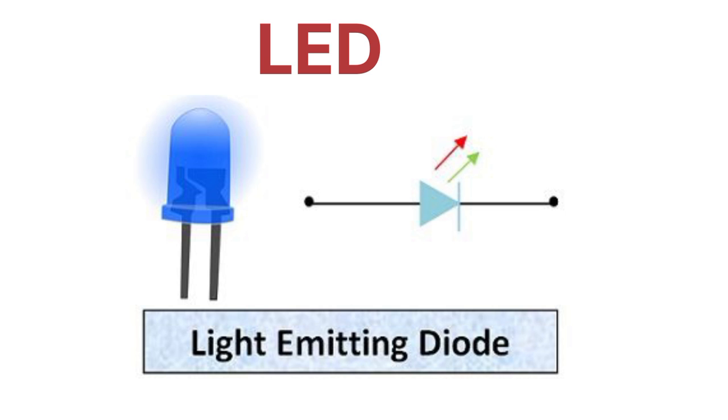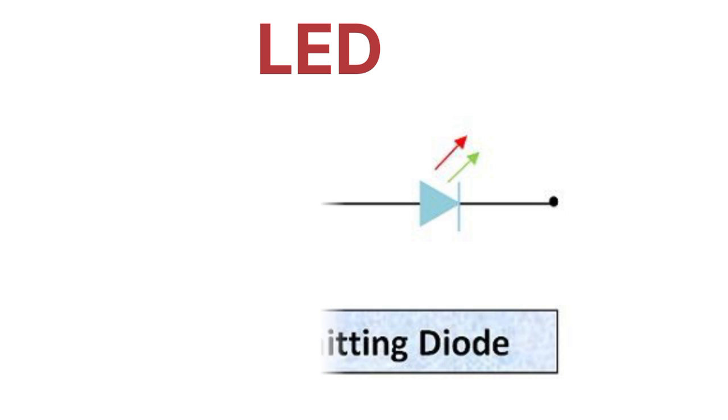In 1962, in the month of October, LED was invented by HJ Round.